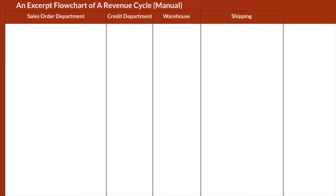The flowchart is as follows. Herein, there are five departments, namely Sales Order Department, Credit Department, Warehouse, Shipping and Billing Department. Then, look at the processes involved.